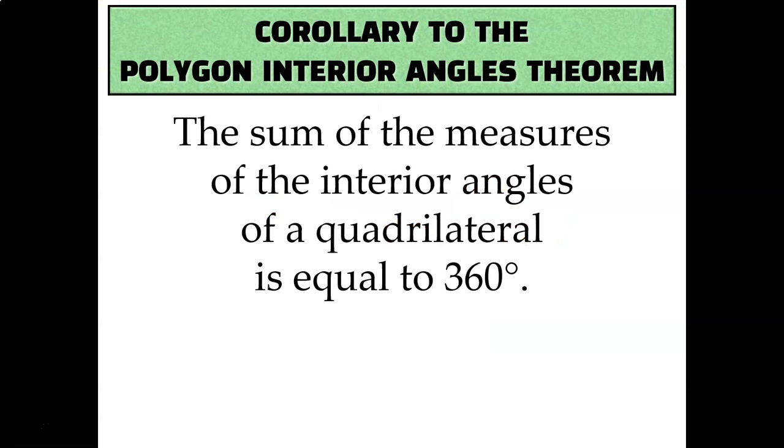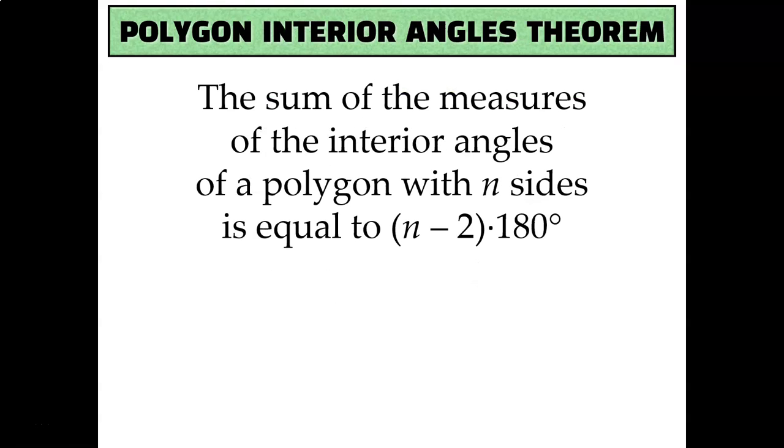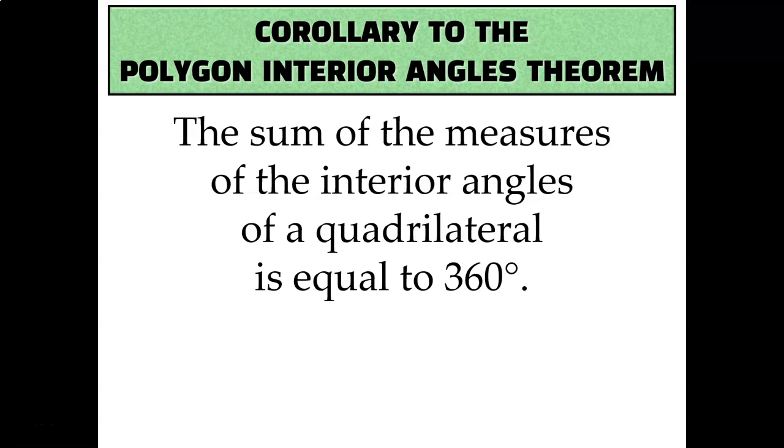Next, let's talk specifically about quadrilaterals because that's going to be our focus for the rest of this entire unit. So instead of just using the polygon interior angles theorem every time, which is this formula that we derived earlier, well, if it's a four-sided figure, then it's 4 minus 2 every time, so 2 times 180. So that's what this corollary is for. If you're specifically talking about a quadrilateral, then you can just say that the sum of the interior angle measurements has to be 360 degrees because 4 minus 2 times 180 is 360.